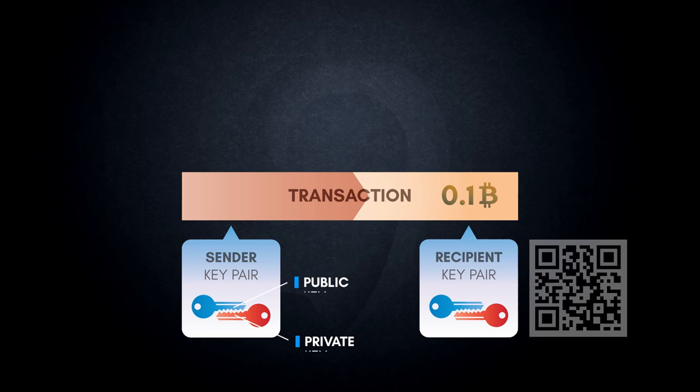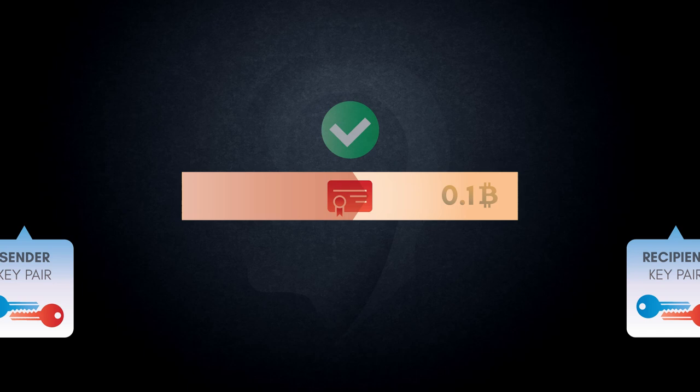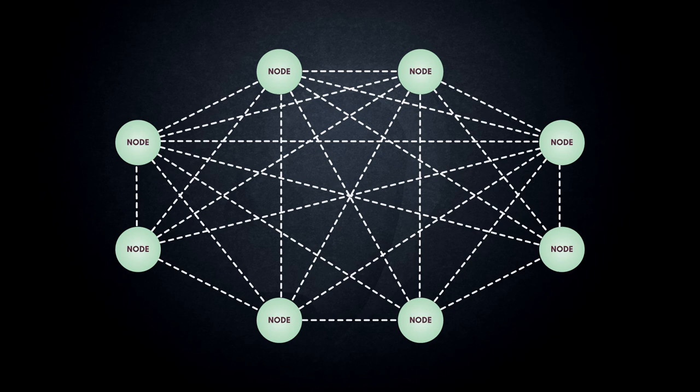The transaction is then signed with the sender's private key, and due to the nature of asymmetric encryption, anyone can verify that this signature was created with the sender's private key using only their public key. This in effect provides cryptographic proof that the transaction was created only by the owner of the private key. Once a transaction is created, it's sent to the closest node where it's subsequently distributed throughout the network. Some of these nodes participate in updating the shared ledger in an integral process known as mining.